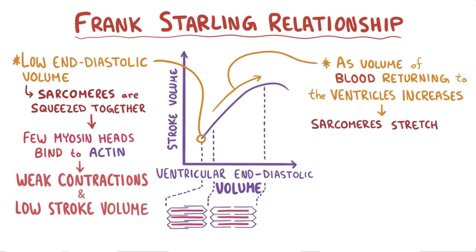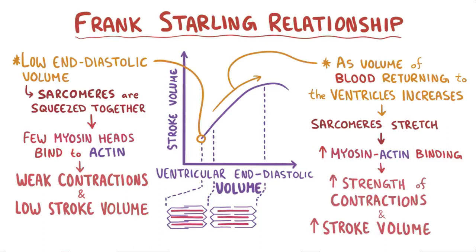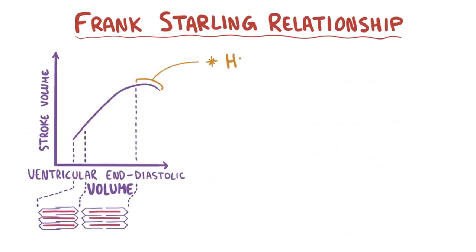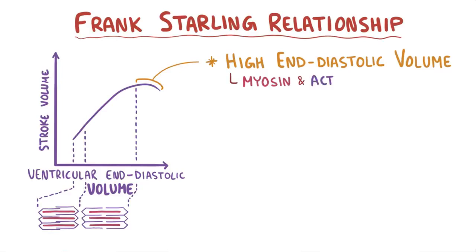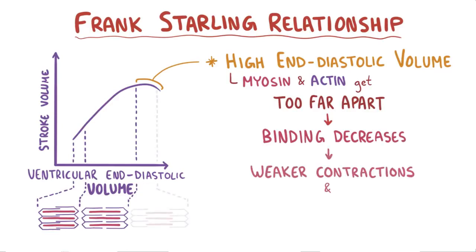As the volume of blood returning to the ventricles increases, sarcomeres stretch and there's more myosin-actin binding, so a greater strength of contraction is achieved and stroke volume rises. That's true until the end-diastolic volume becomes too high, and the myosin and actin get too far apart, which causes the amount of myosin-actin binding to decrease, resulting in a weaker contraction and the stroke volume falls off again.